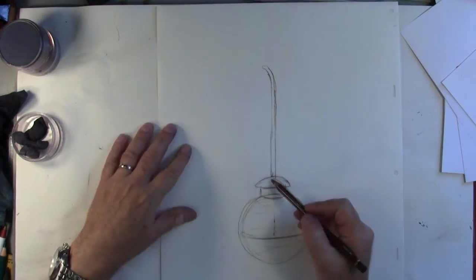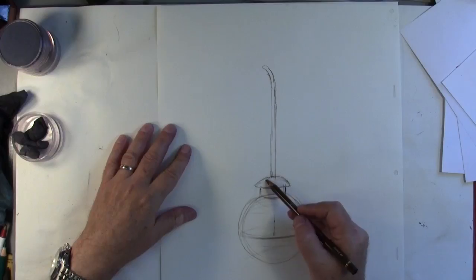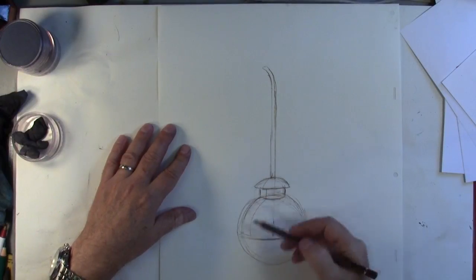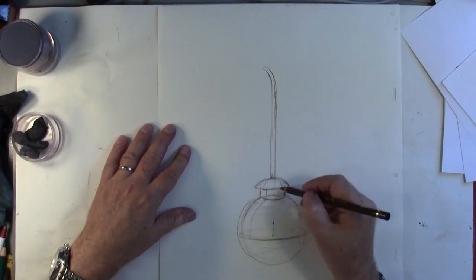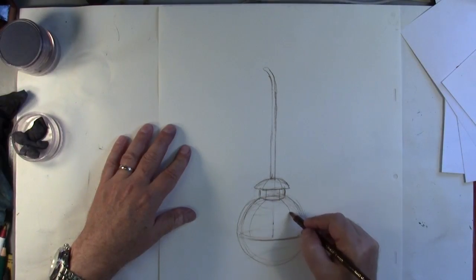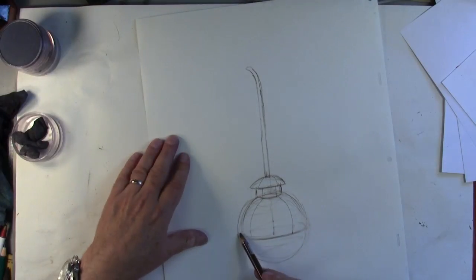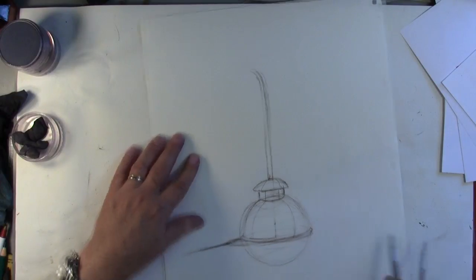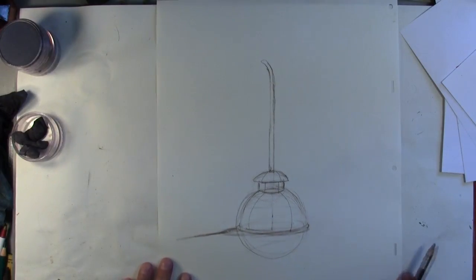I'm going to sneak. And then we go cross-contour. Cross-contour. So there's your drawing. Do you see how simple it is?